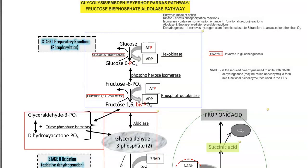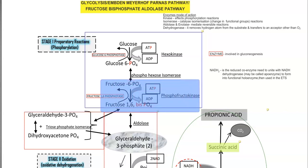In Stage 1, the preparatory reaction involves phosphorylation of the sugar. Glucose is converted into glucose-6-phosphate — that is the phosphorylation step. In the next step, glucose-6-phosphate is converted into fructose-6-phosphate by an isomerase enzyme, specifically phosphoglucose isomerase. In the subsequent step, a phosphorylation is effected with the help of phosphofructokinase, resulting in the addition of a second phosphate molecule, converting fructose-6-phosphate into fructose-1,6-bisphosphate, preparing it for the glycolysis process. The enzymes shown in rectangular boxes here are involved in the gluconeogenesis process.